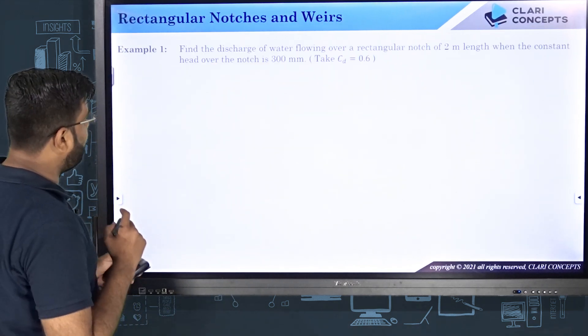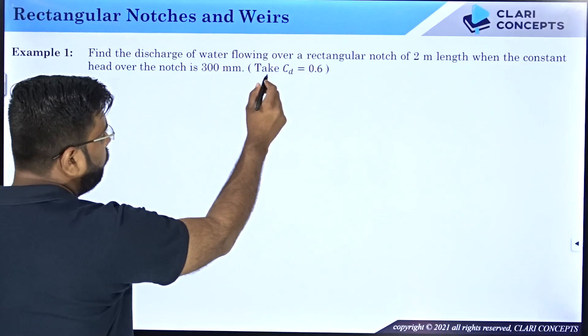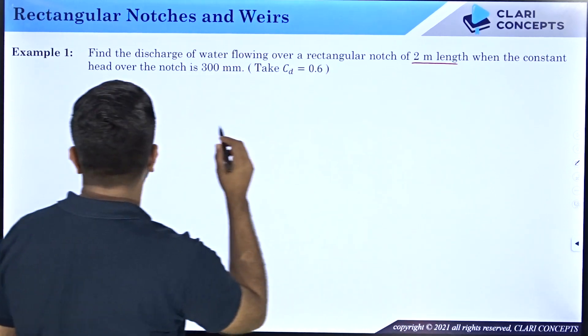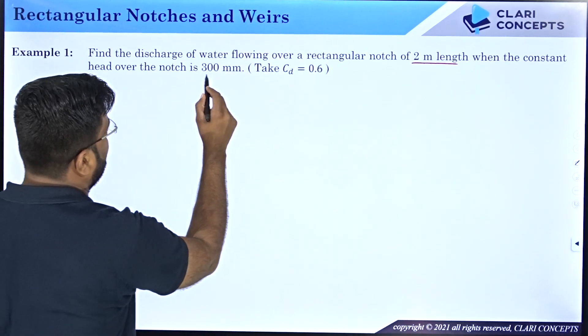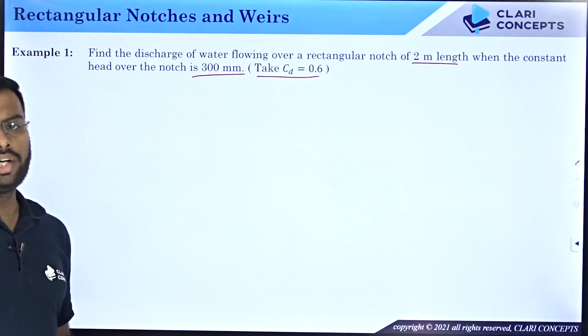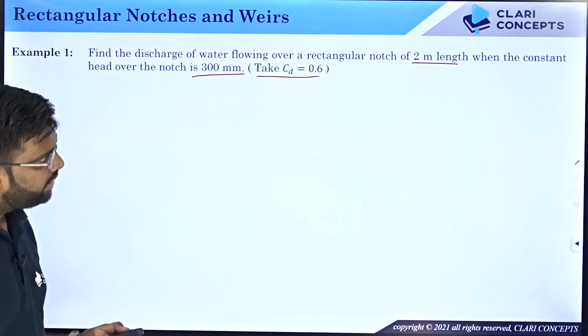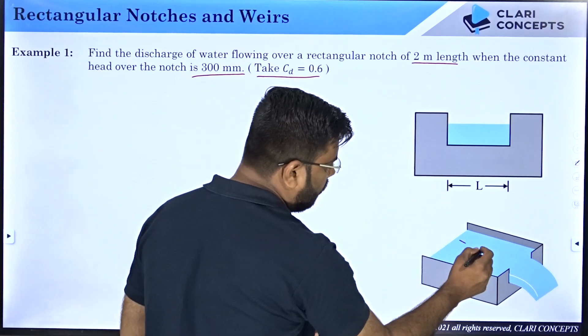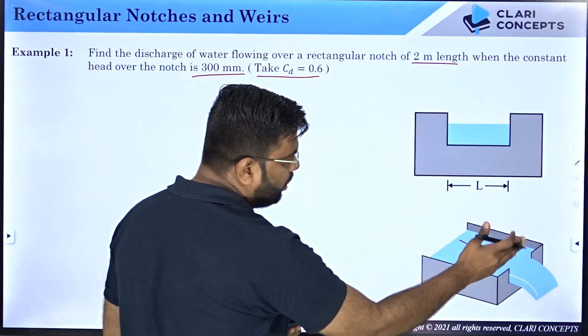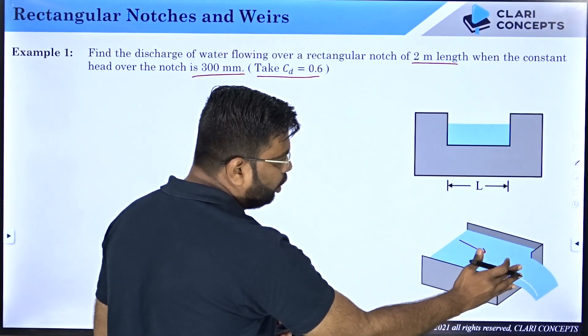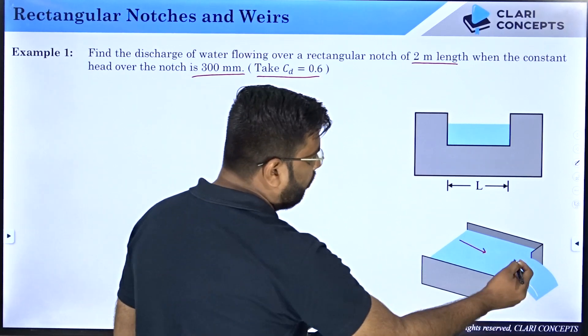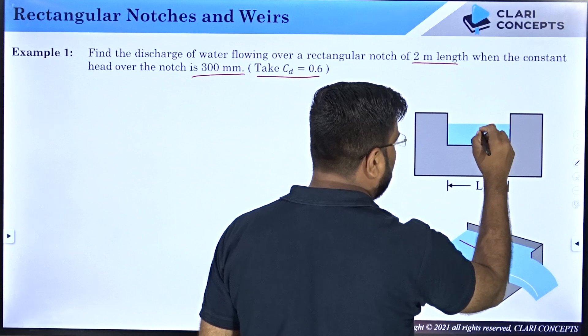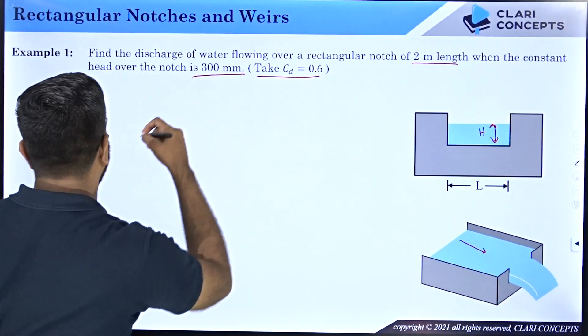The first numerical that we have is: find the discharge of water flowing over a rectangular notch of 2 meter length when the constant head over the notch is 300 mm and take CD, which is coefficient of discharge for the notch, as 0.6. So you have been given a rectangular notch. You can see that the water body, the open water body, is where the water is flowing and you have the notch in front of that to measure the flow rate. If you look at it from the front you will see the water is flowing through this notch and the height capital H is given to you as 300 mm.